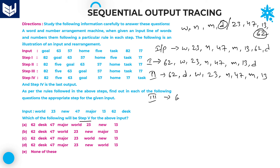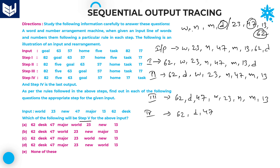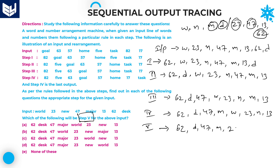In step 3: 62, D. The second highest number is 47, which comes to 3rd position. Remaining: W, 23, N, M, 13. In step 4: 62, D, 47. The next letter in alphabetical order is M. So the next word starts with M. Remaining: W, 23, N, 13. In step 5, after 62, D, 47, M — write the next highest number which is 23. Remaining as per the order: W, N, 13.